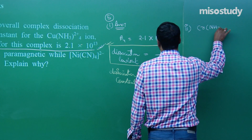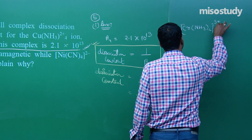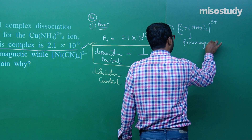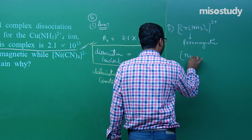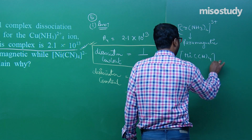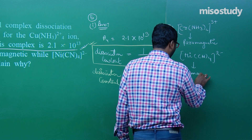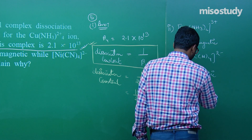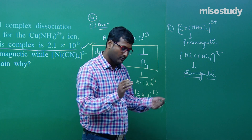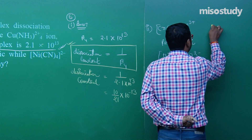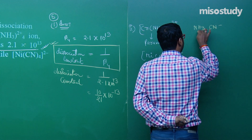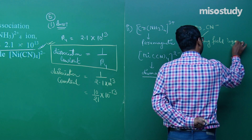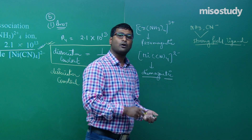Second part: Cr(NH3)6^3+ is paramagnetic, whereas Ni(CN)4^2− is diamagnetic. Both NH3 and CN− are strong field ligands — both form inner orbital complexes. Let us check chromium: Cr is in +3 oxidation state. General configuration: [Ar] 3d5 4s1; in +3 state: [Ar] 3d3.